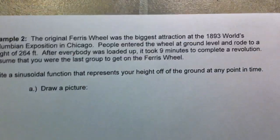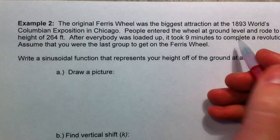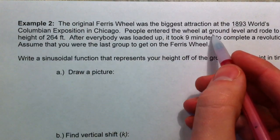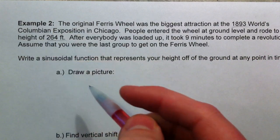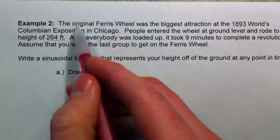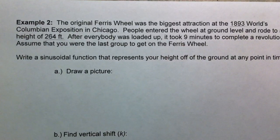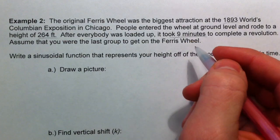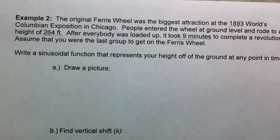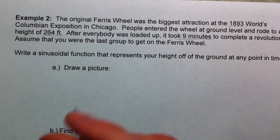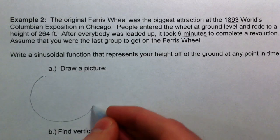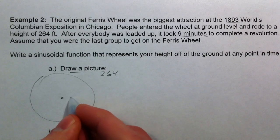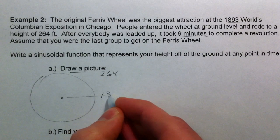Let's try a story problem. The original Ferris wheel was the biggest attraction at the 1893 World's Columbian Exposition in Chicago. It started at ground level and rose to a height of 264 feet — this thing was huge. After everybody was loaded up, it took 9 minutes to complete a revolution. Up at the top is 264 feet, and in the middle is half of that: 132 feet.